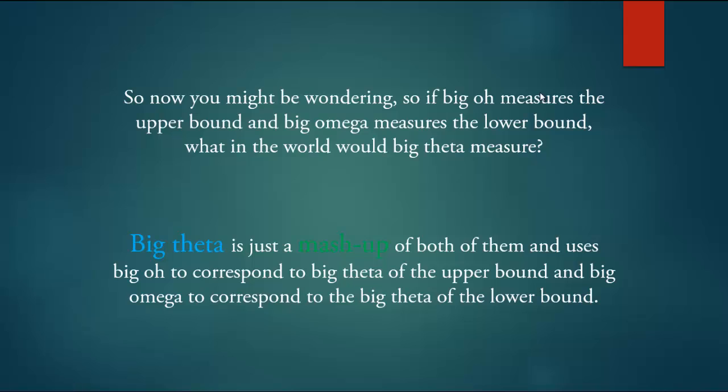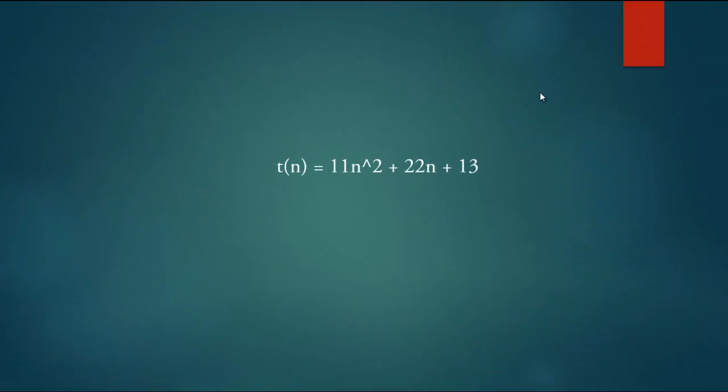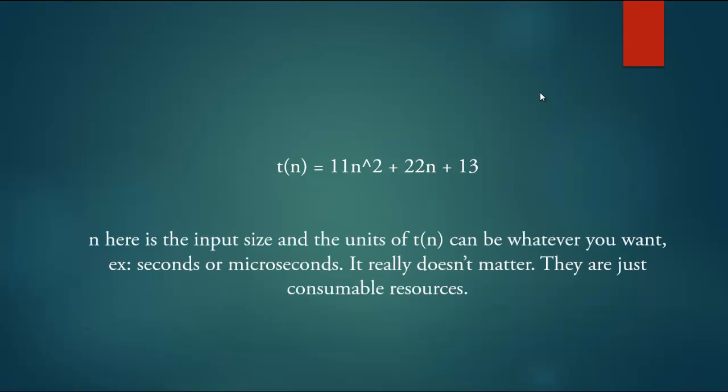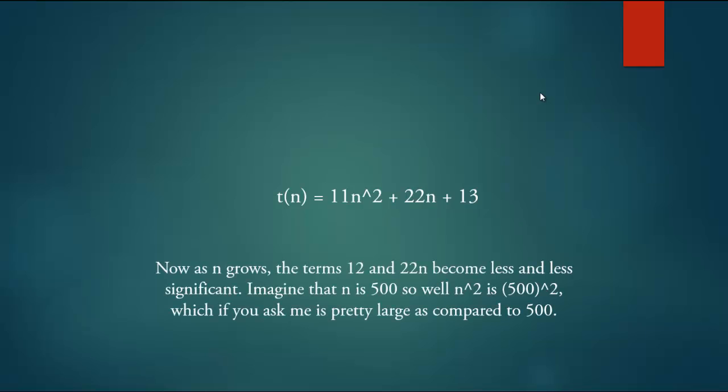So to make the concept more concrete, let us consider an example. Suppose you have an algorithm which runs a function of the input size as T(n) is equal to 11n² + 22n + 13. n here is the input size and the units of T(n) can be whatever you want. Example seconds or microseconds, it really doesn't matter. They are just consumable resources and that's how you should think about them. Now as n grows, the term 13 and 22n become less and less significant.